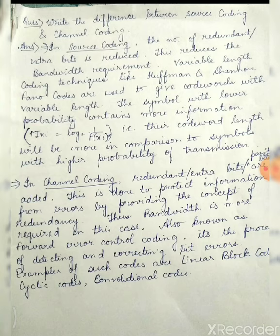Redundant bits are added for increasing the capability of error detection and correction. When more bits are added, the required bandwidth will also be more, so this scheme will need more bandwidth. But the advantage is that we can control the error in this type of encoding scheme. That is why it is also known as forward error control coding. The error correcting codes include linear block codes, cyclic codes, and convolutional codes.